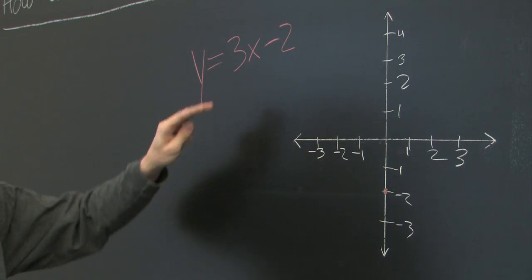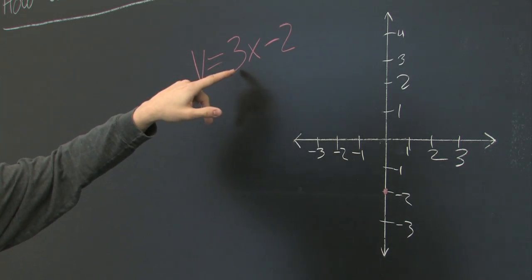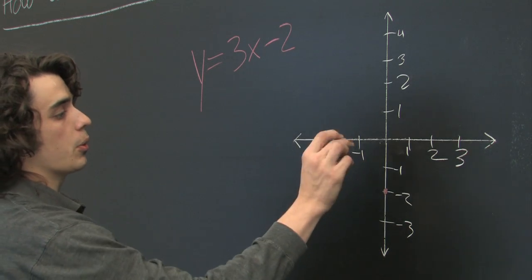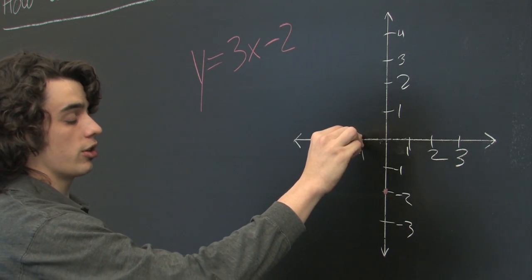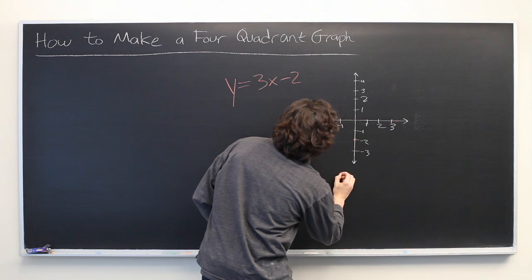Okay, what about if x is negative one? Well, negative one times three is negative three, negative three minus two is negative five. So go to input value of negative one, which is on the left half of our graph, and count down to negative five, which will be somewhere down here.